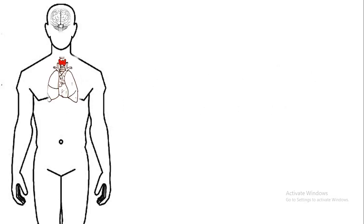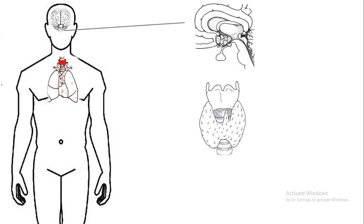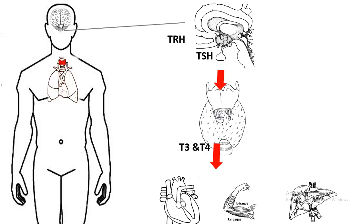Thyroid hormone regulation involves both the hypothalamus and the pituitary. The hypothalamus releases thyroid releasing hormone (TRH), which acts on the pituitary to stimulate secretion of TSH. TSH then acts on the thyroid gland to produce and secrete T3 and T4, which have widespread roles in the heart, muscle, liver, and overall control of metabolism.